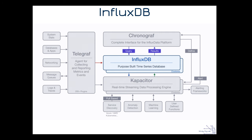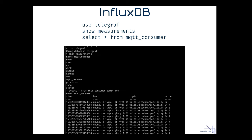The next thing is InfluxDB, where our time series data is going. Through the command line interface, you can go into InfluxDB on the server, type 'use telegraph' to select that database, then 'show measurements.' Measurements are like tables in SQL. We want to see the 'mqtt_consumer' measurement, because that tells us our plugin going out to the MQTT broker is actually receiving data. The first time it receives data, if the measurement doesn't exist, it will be created automatically.